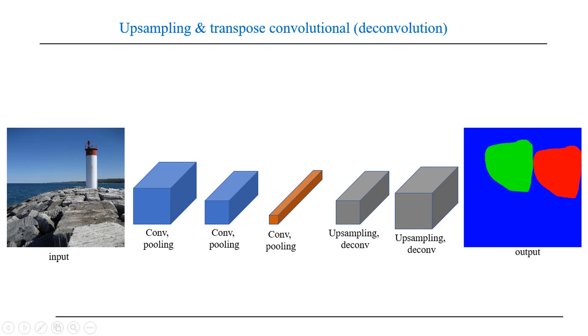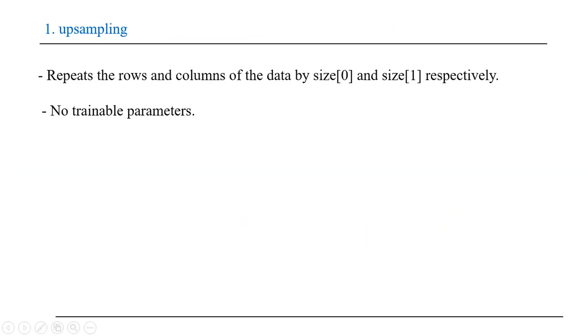go back to the original size we use upsampling and transpose convolution. First, let's talk about upsampling. Upsampling layers only repeat the rows and columns of the input data by a specific size. It's worth noting that upsampling doesn't have trainable parameters.